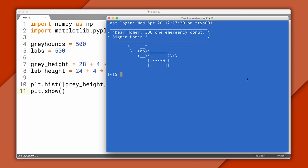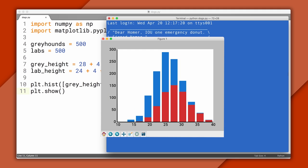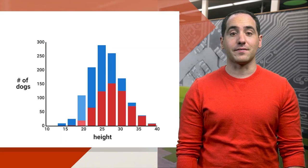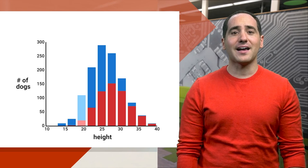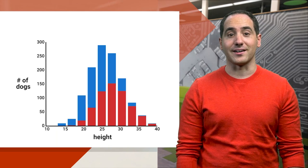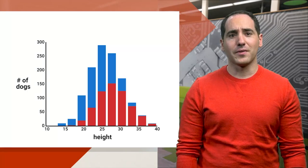This shows how many dogs in our population have a given height. There's a lot of data on the screen, so let's simplify it and look at it piece by piece. We'll start with dogs on the far left of the distribution, say who are about 20 inches tall. Imagine I asked you to predict whether a dog with this height was a Lab or a greyhound. What would you do?